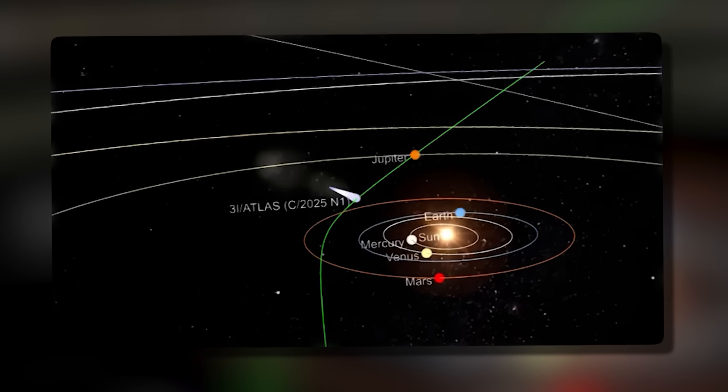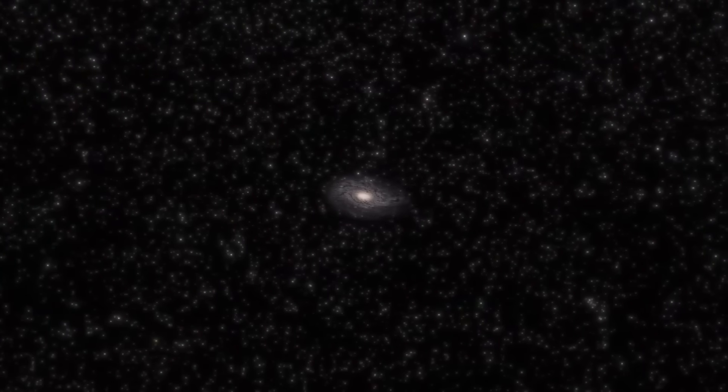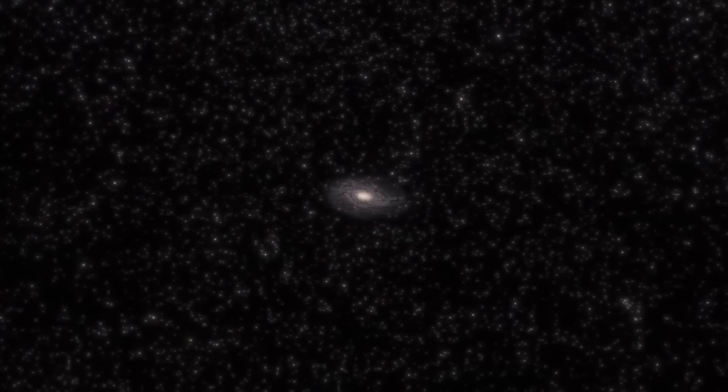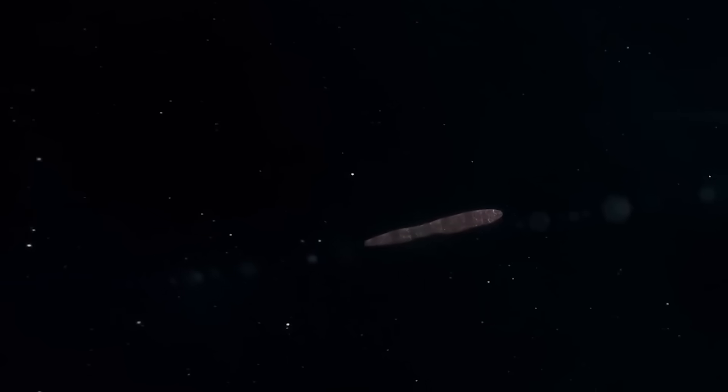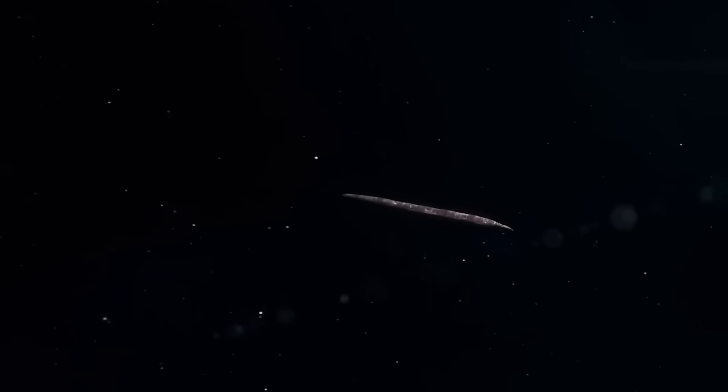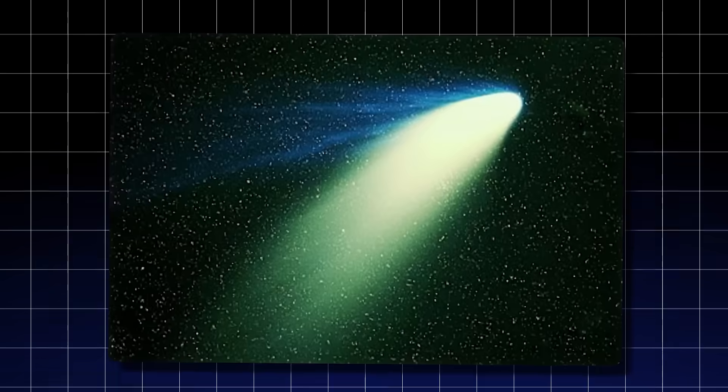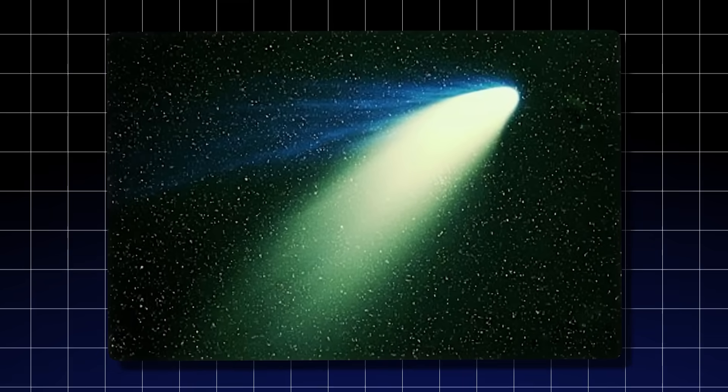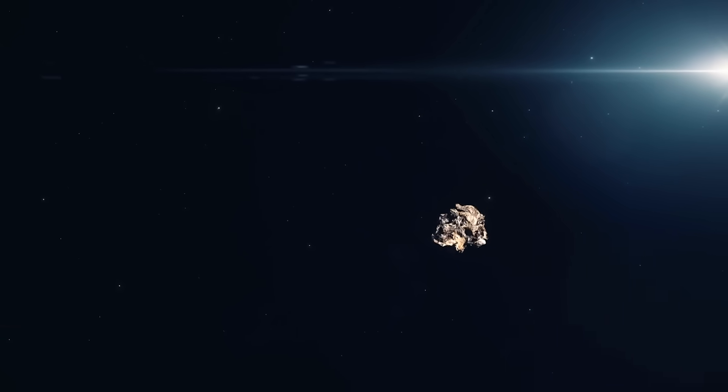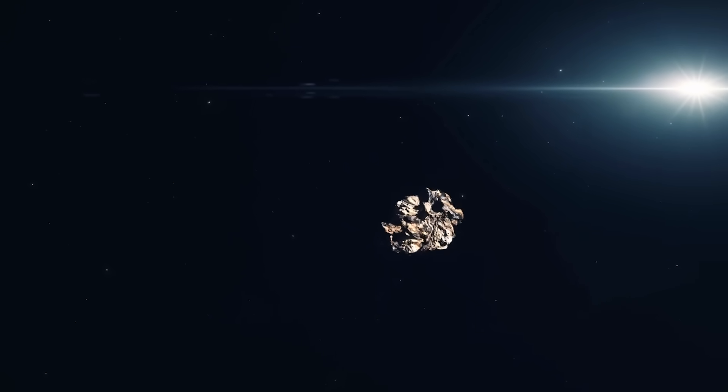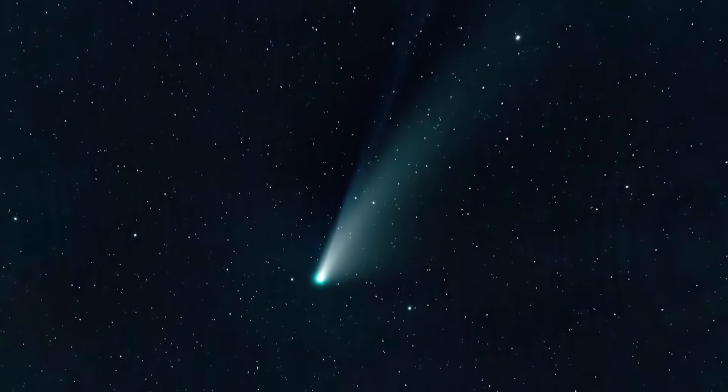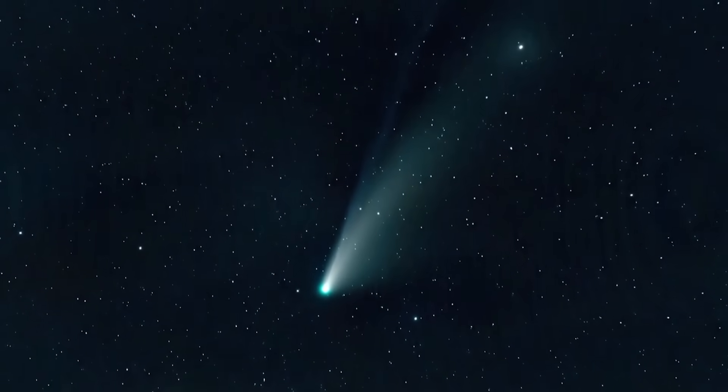The implications of this cosmic collision are vast and layered. For one, this event presents an opportunity to observe how an interstellar object behaves under the extreme gravitational and thermal forces of the sun. When comets from the Oort cloud dive toward the solar furnace, they typically erupt in a spectacular display of light, their icy bodies vaporizing into brilliant tails of gas and dust.